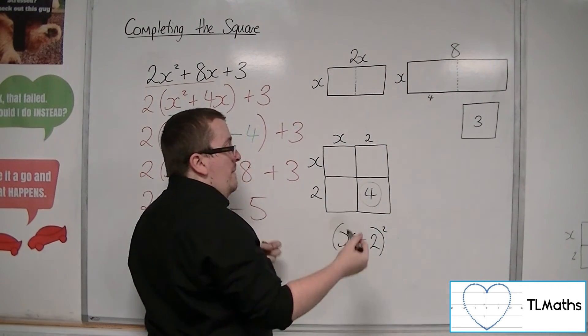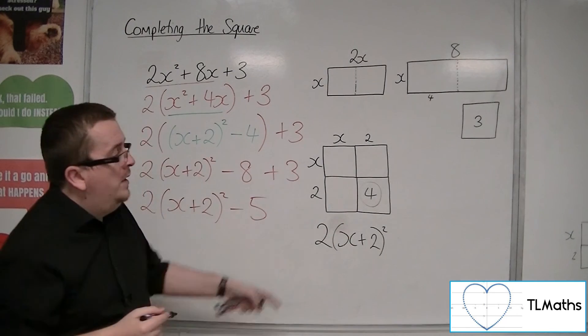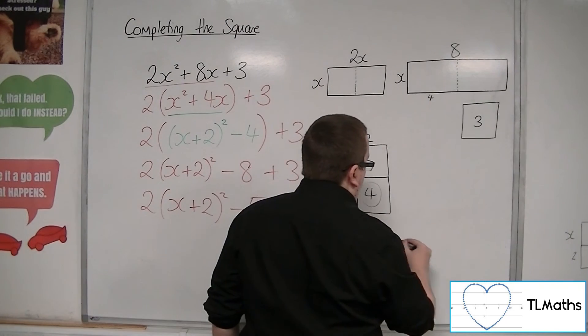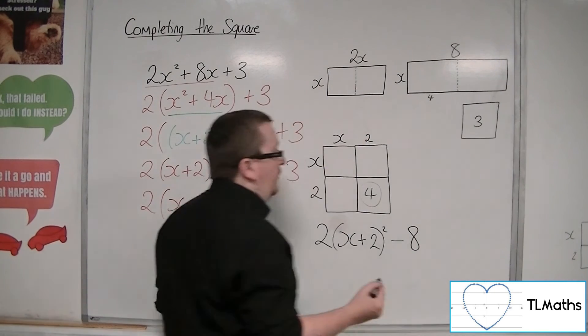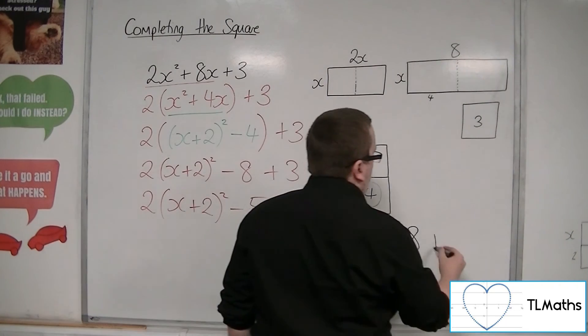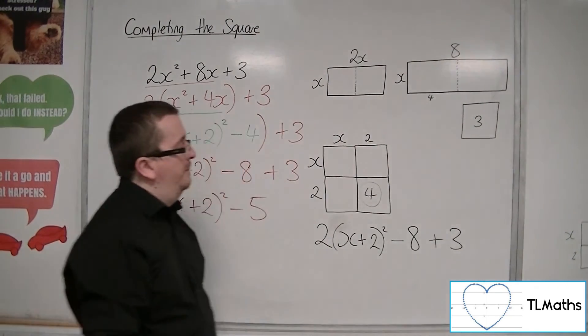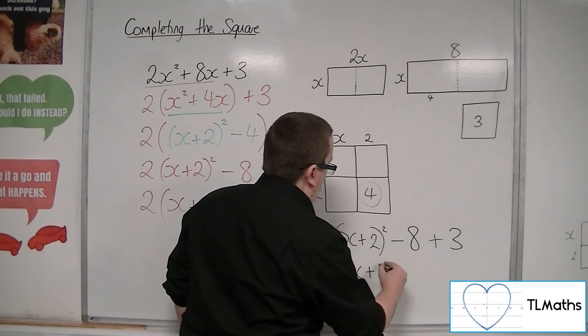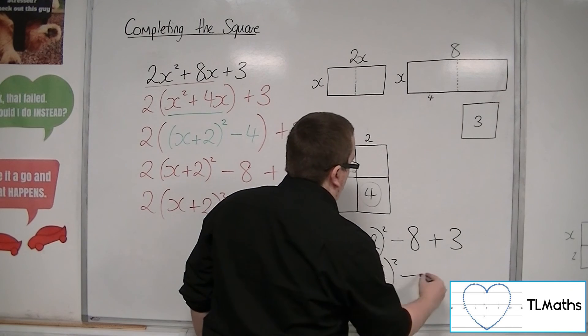But remember, it's all doubled, but I've got this 4 bit that is missing, so I'm going to have to take away 2 lots of that, so minus 8. And I've got this plus 3 on the end that's sticking out like a sore thumb. So then this is the 2 lots of x plus 2 squared minus 5.